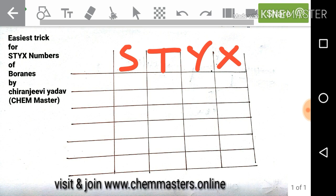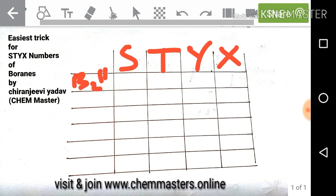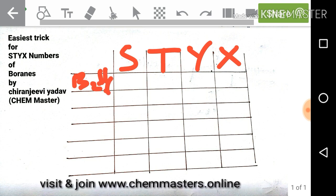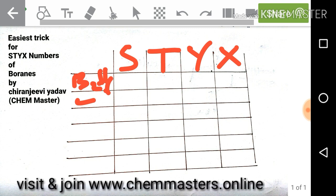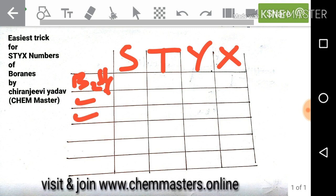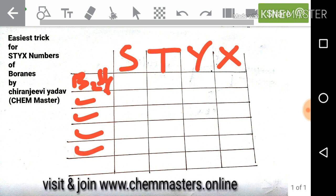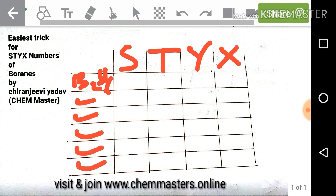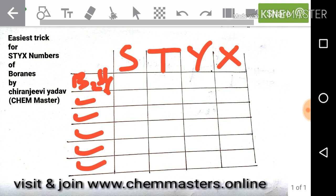Now we need to write Boranes, so we can start from B2H6, followed by B4H10, followed by B5H9, followed by B5H11, followed by B6H10, followed by B10H14. Now, here is the trick.